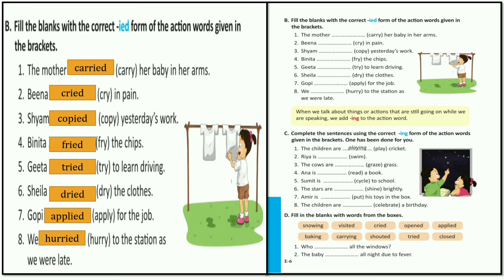Now fill in the blanks with the correct IED forms of action words given in the bracket. The mother carried her baby in her arm. See, this action word is ending with Y - Y goes away and we add IED: carried.